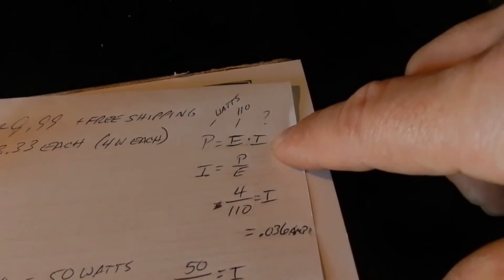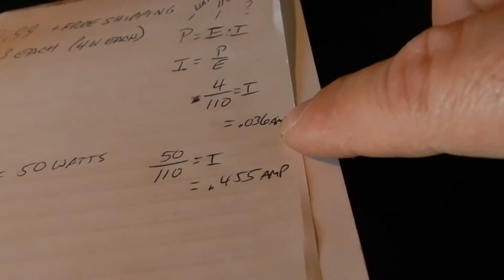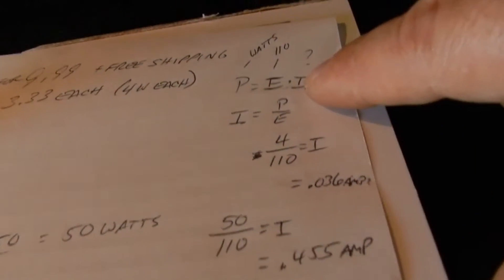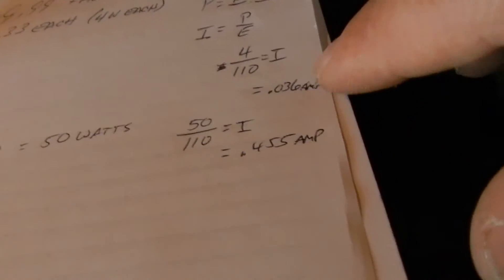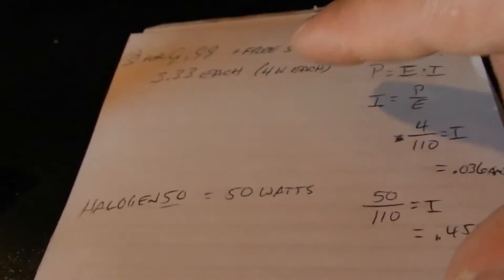And also, this is the guy that can kill you when it's over a certain amount of amps, and it's very minute too. Alright, so I'm using the Pi formula, we have 4 watts per light bulb, 110, we're looking for amps. And it's .036 amps that each one of these bulbs pulls, so times that by 3 and that's what it's pulling.